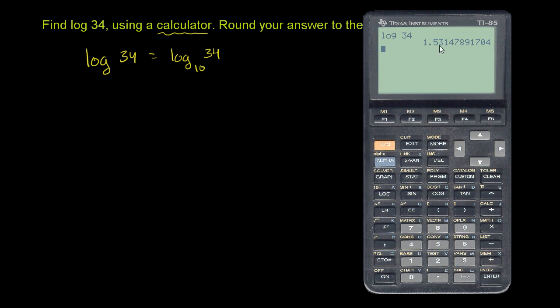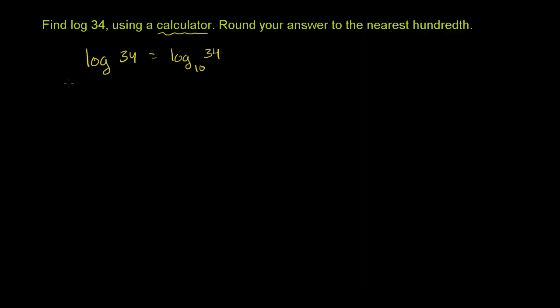And that gets us to 1 point. We have to round to the hundredth. It's 1.53. The thousandths place is a 1. So we do round down. So 1.53. So this is equal to, or I should say, approximately equal to 1.53. And we're done.